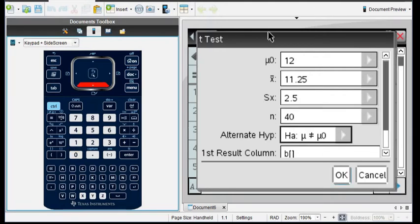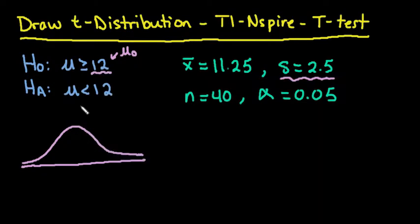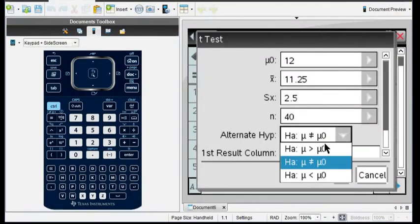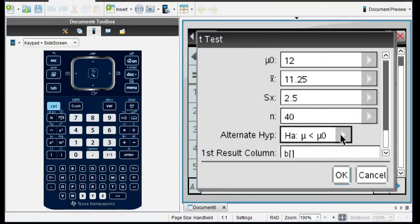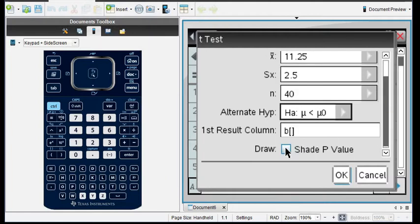And for this one, we look at the alternative. Remember that our alternative tells us the tail of our test. So in this case, since it's less than, we would want to change this to be less than. So the Ha, we have mu is less than. And we're going to scroll down here just a little bit to where it says draw. And I'm going to select this and click OK.